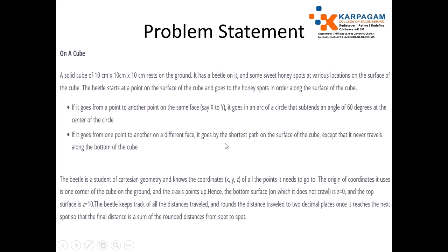For the second concern, the beetle is a student of Cartesian geometry and records the coordinates X, Y, Z of all the points it needs to go to. The origin of the coordinates is one corner of the cube on the ground, and the Z axis points upward. Hence the bottom surface on which it does not crawl is Z equal to zero.